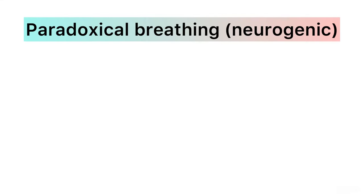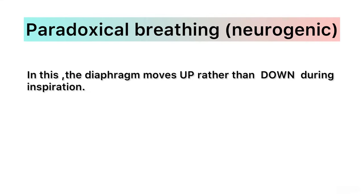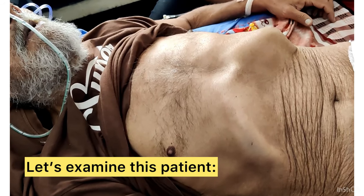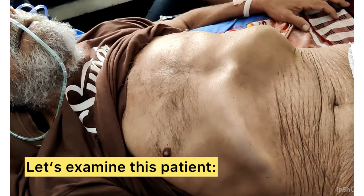In Neurogenic Paradoxical Breathing, the diaphragm moves up rather than down during inspiration. The abdomen moves in as the chest rises.